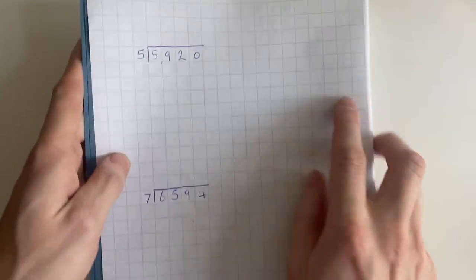Brilliant, today children we're going to be doing our final lesson on division and we're going to be looking at dividing a four digit number by a one digit number.